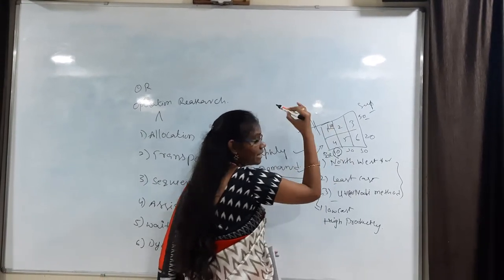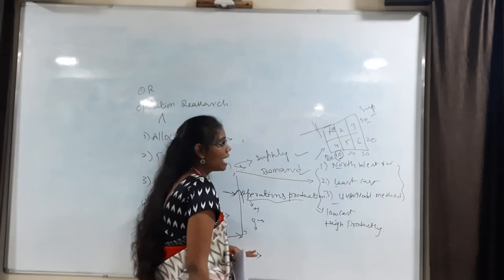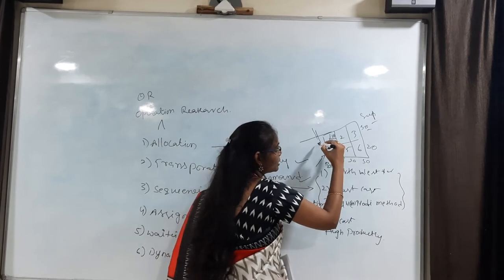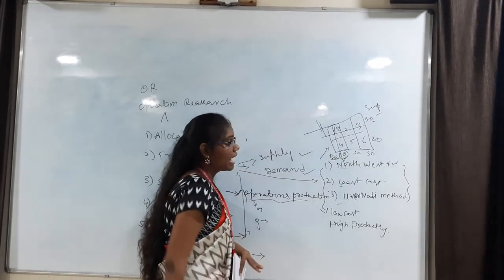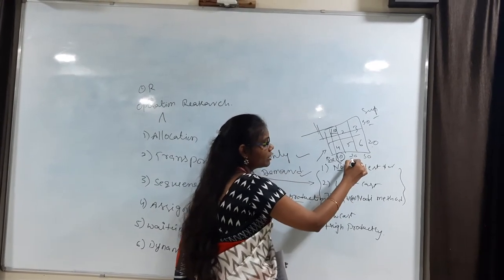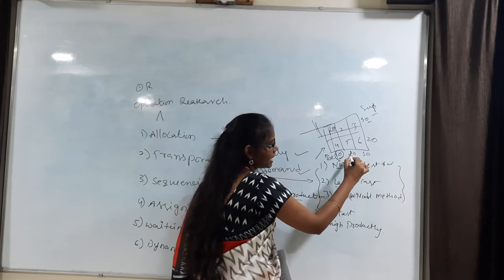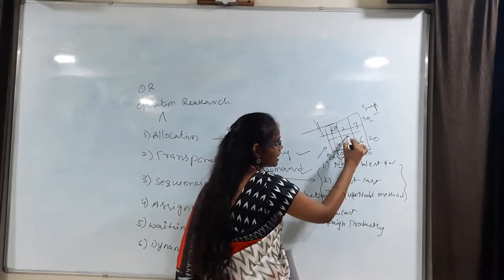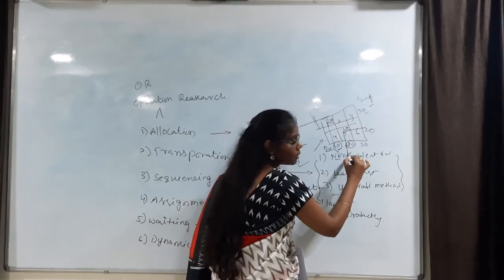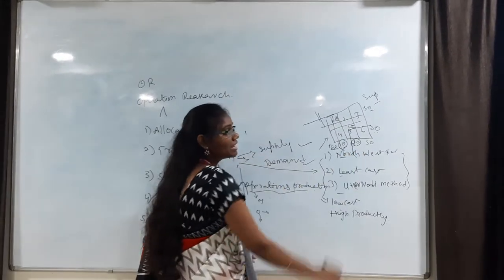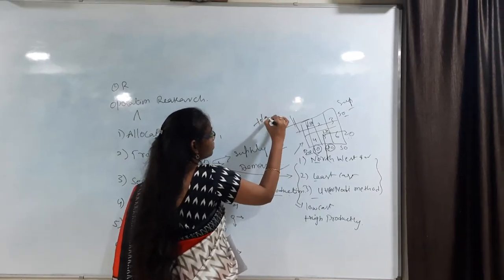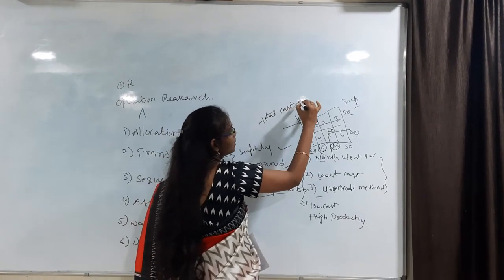We allocate related to that lowest value and then remove the entire column. Next, we find what is available of the supply and demand and identify the least value again. We allocate that to the related cell and remove the total entire column. Finally, we find out the total productivity or total cost of the product.